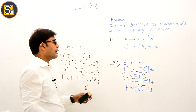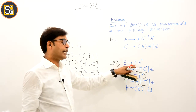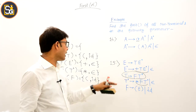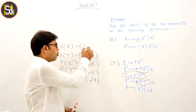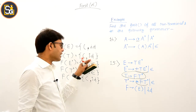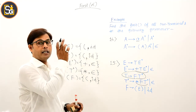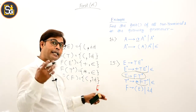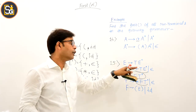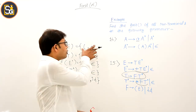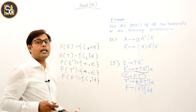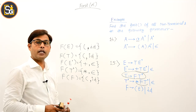Now come to E. Agar E ki baat karein, to E derives T E-dash — to jo non-terminal T hai, FIRST of E wahi hoga jo FIRST of T hoga. FIRST of T hum already compute kar chuke hain: opening parenthesis aur id. Ab chunkee agar T ke FIRST mein epsilon hota, matlab T null derive kar raha hota, to E-dash ke FIRST bhi union karte. Lekin aisa kuch nahi, to bas itne par rukh jaayenge. So this is the answer for our question — and that's done.